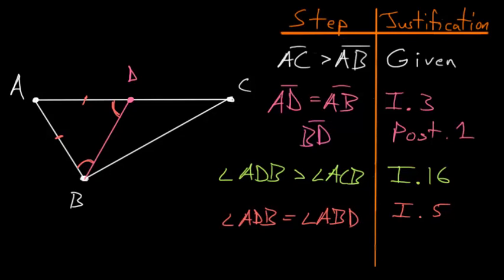But we also know that this angle ABD is smaller than the angle ABC, since it's only a part of it. And common notion number 5 says that the whole is always greater than the part. So let's write that the angle ABC is always bigger than the angle ABD.